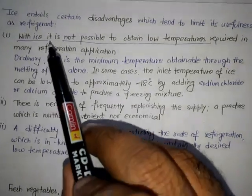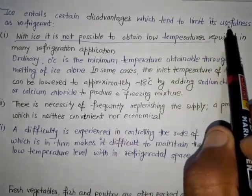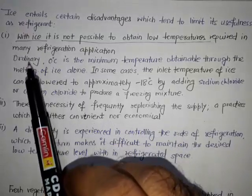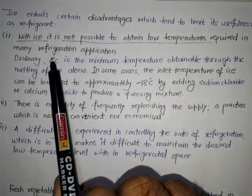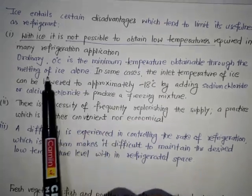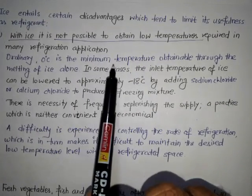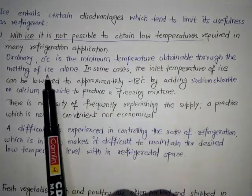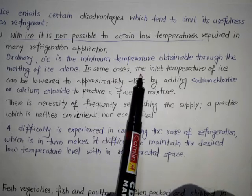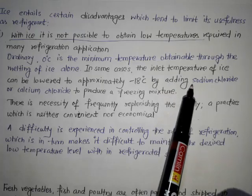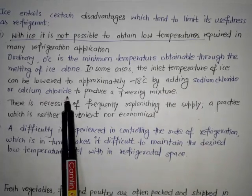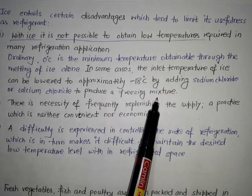Ice entails certain disadvantages which tend to limit its usefulness as a refrigerant. With ice, it is not possible to obtain low temperatures required in many refrigeration applications. Ordinarily, zero degrees Celsius is the minimum temperature obtainable through the melting of ice alone. In some cases, the inlet temperature of ice can be lowered to approximately minus 18 degrees Celsius by adding sodium chloride or calcium chloride to produce a freezing mixture.